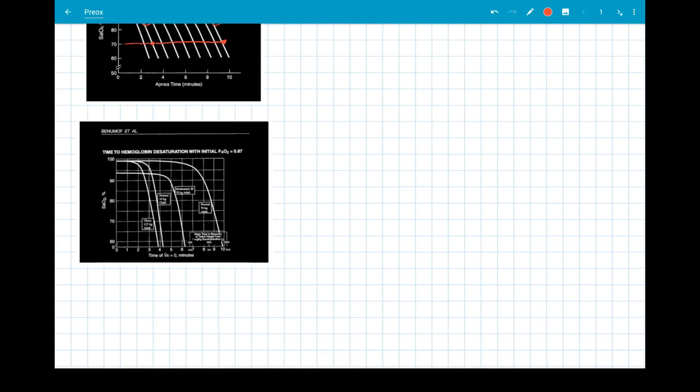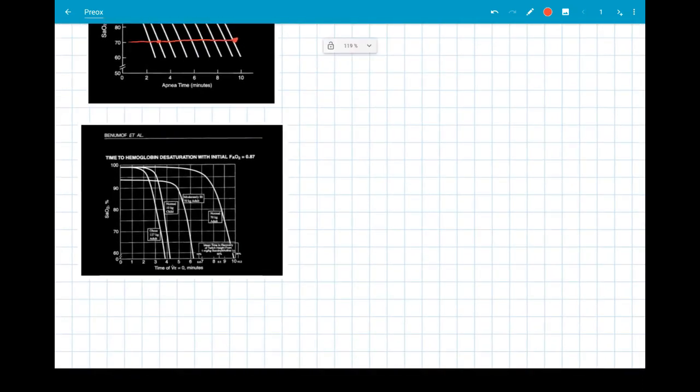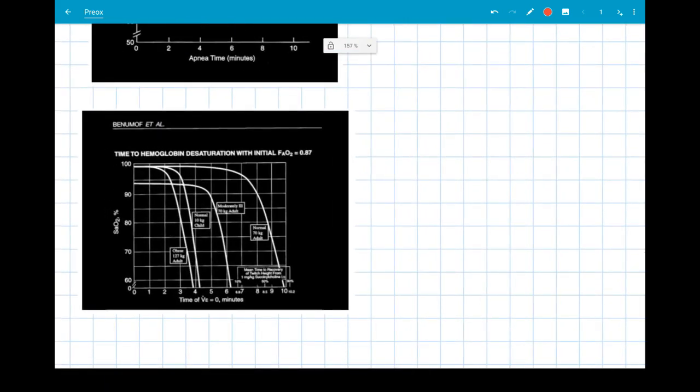Now, this other curve is very similar to the one we just saw, but it includes other patients that you may be dealing with. The normal patient on the far right, again, will not desaturate for almost 10 minutes if you pre-oxygenate to an FaO2 of 87%. But a moderately ill 70-kilogram patient will only last 6 minutes, as shown here.